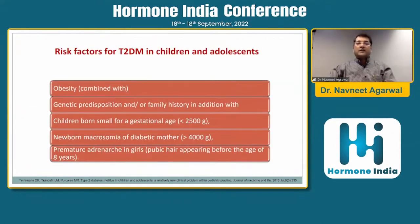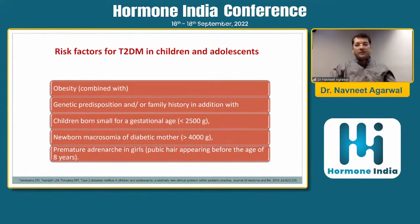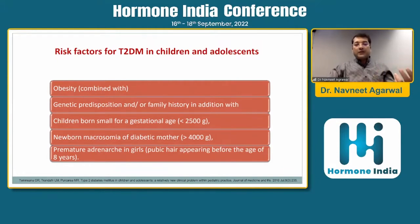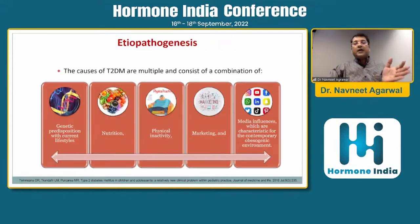What are the different risk factors for type 2 diabetes in children and adults? One is obesity — there is an epidemic of obesity in adults and even in school-going children. Then we have genetic predisposition and family history, children born small for gestational age, newborn macrosomia in diabetic mothers, and premature adrenarche in girls.